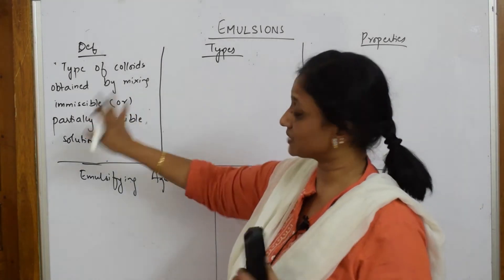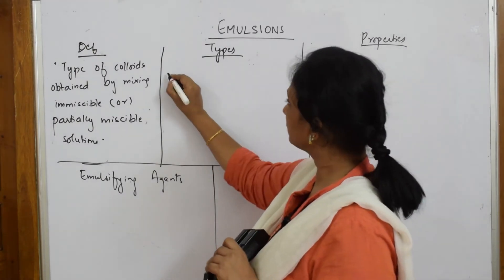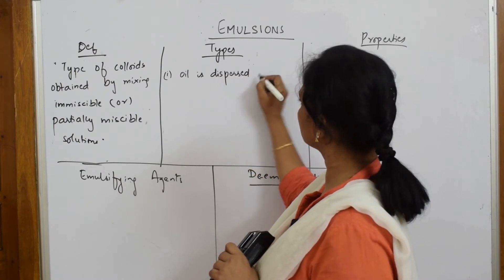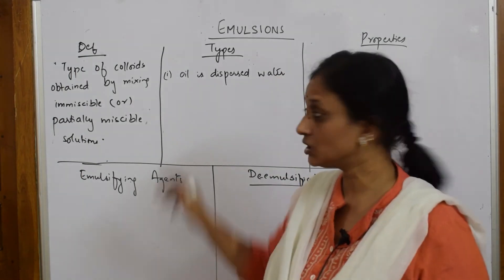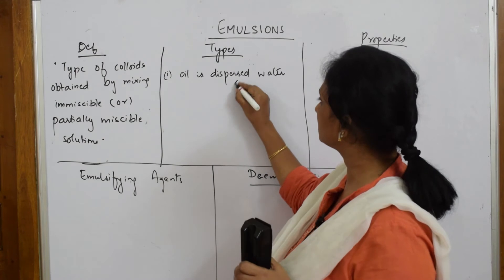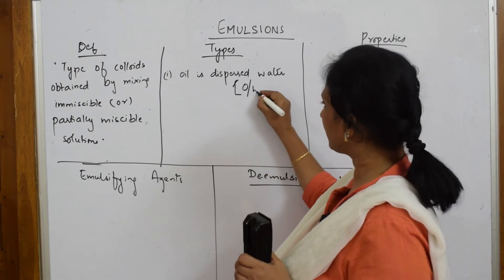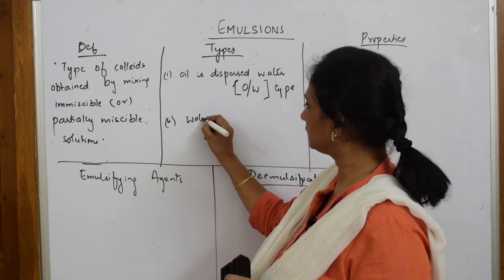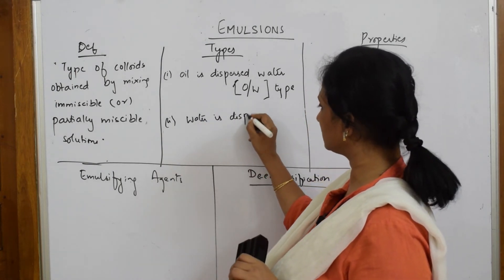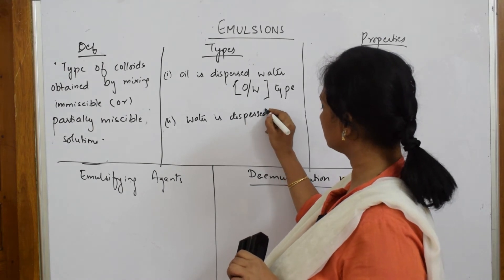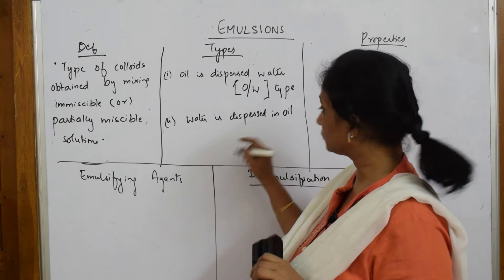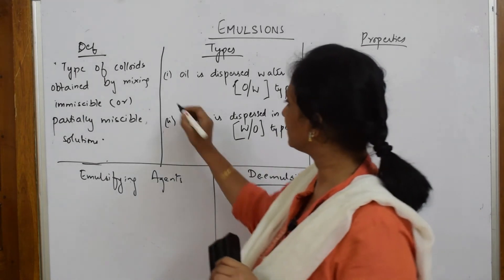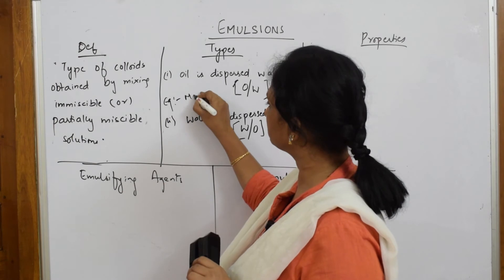There are two types of emulsions. The first type is oil dispersed in water — oil is the dispersed phase and water is the dispersion medium. This is called the O/W (oil-in-water) type. The second type is the opposite: water is the dispersed phase and oil is the dispersion medium. This is called the W/O (water-in-oil) type.